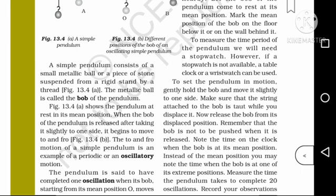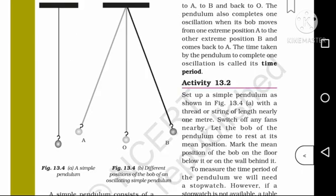The pendulum is said to have completed one oscillation when its bob, starting from its mean position O, moves to A, then to B, and back to O. The pendulum also completes one oscillation when its bob moves from one extreme position A to the other extreme position B and comes back to A.